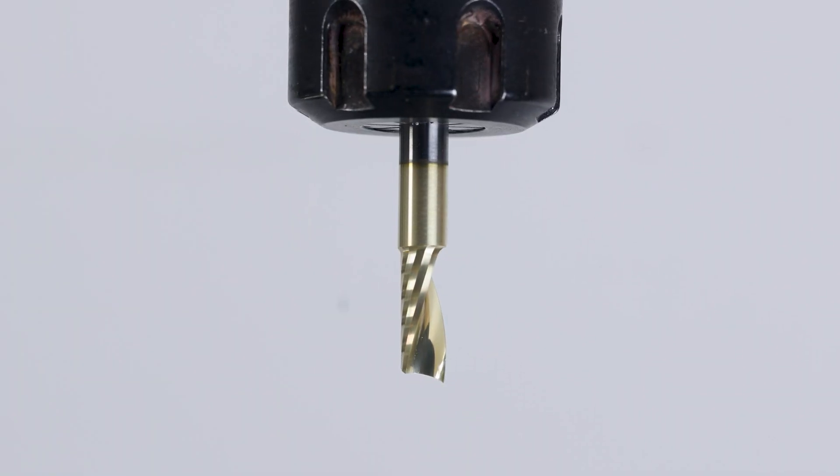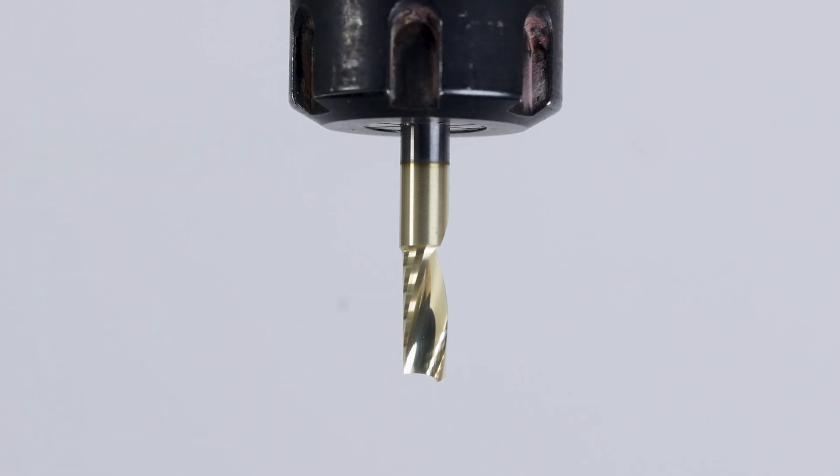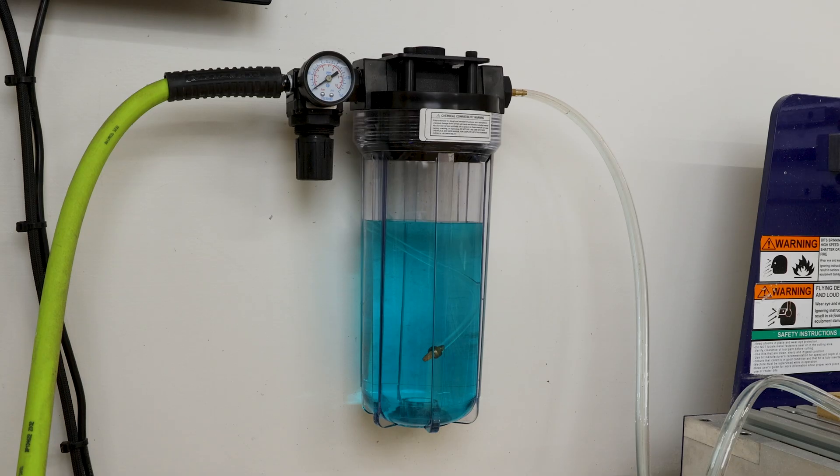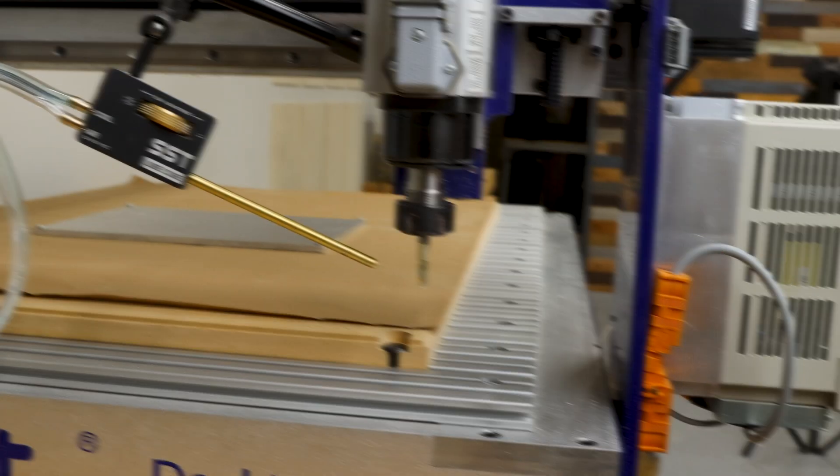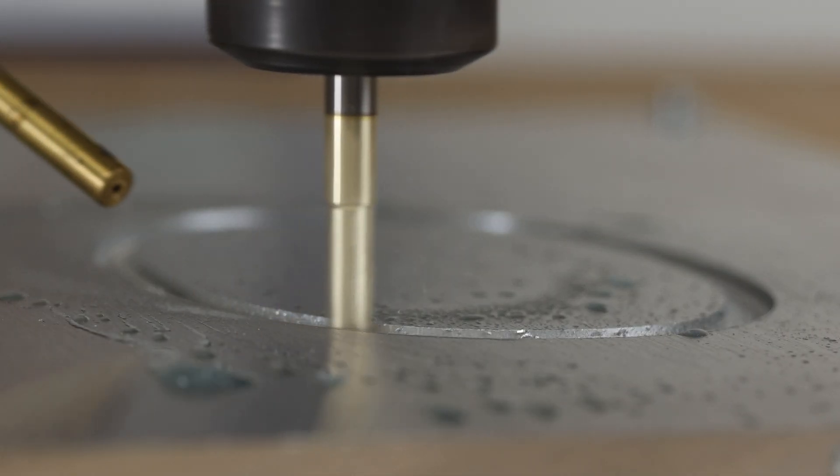To do this, we're going to use an upcut spiral O-flute with a short cutting diameter to minimize any chatter. I'm also using a mist lubricant system hooked into my air compressor to help cool my bit and evacuate my chips.